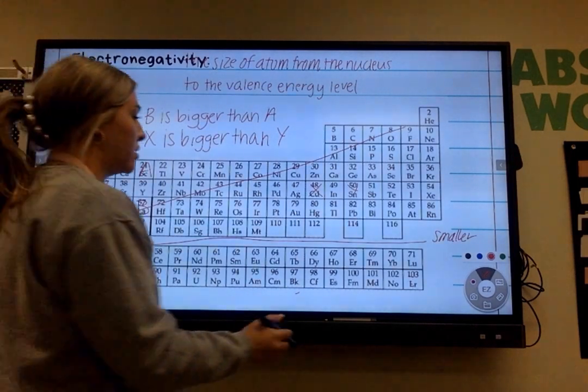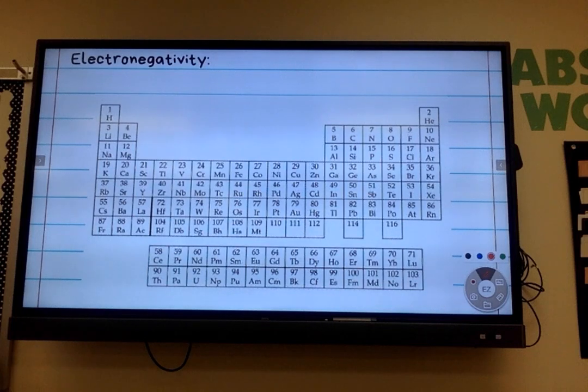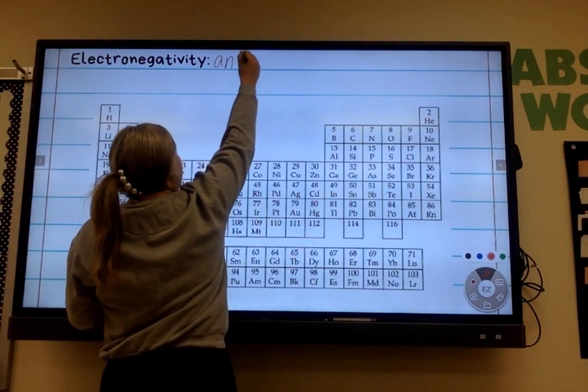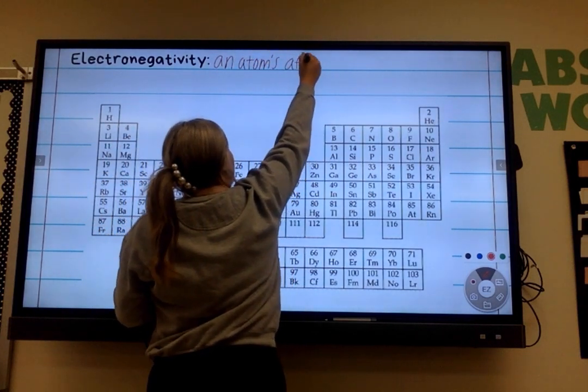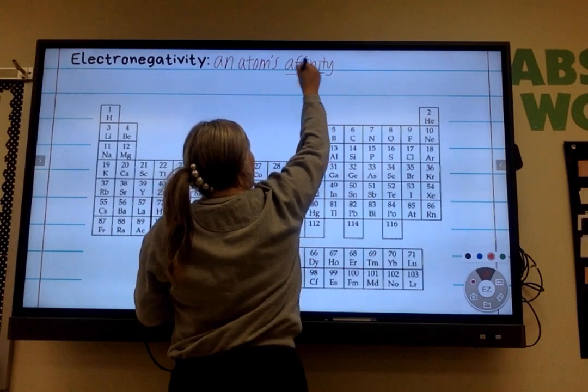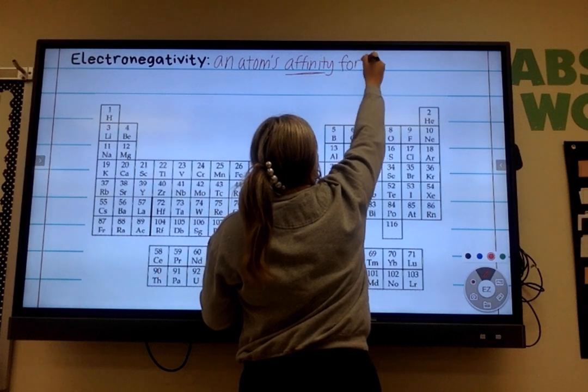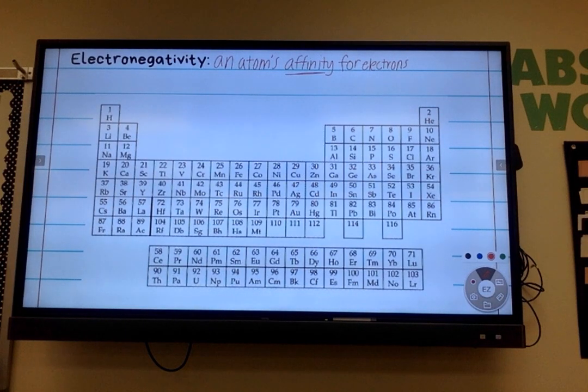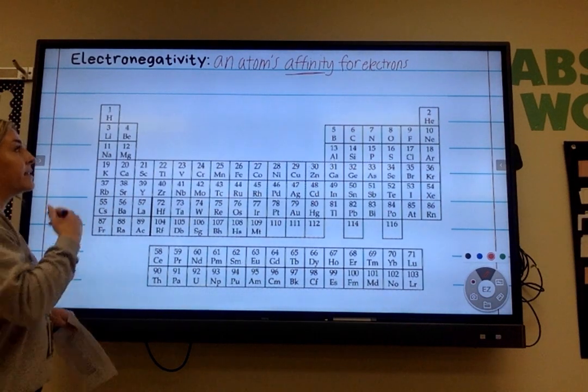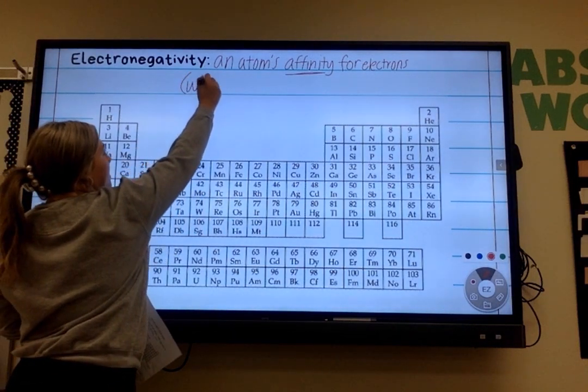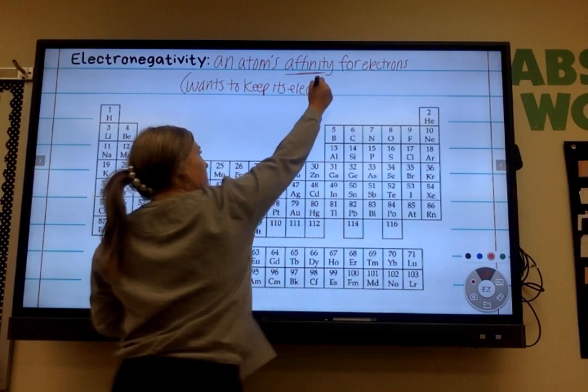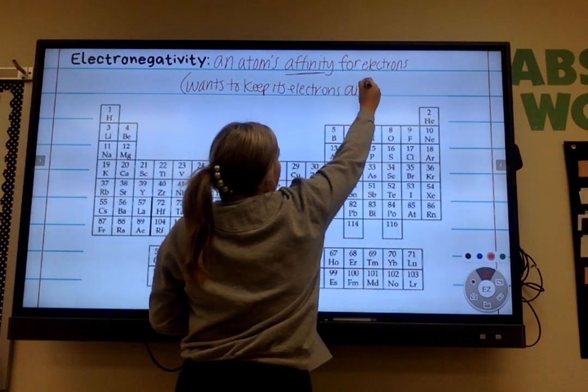So electronegativity is not a word that we use or have heard before probably. So I do need you making sure you write the definition for this. I want you to write that electronegativity is an atom's affinity. Underline that word. It's an atom's affinity for electrons.